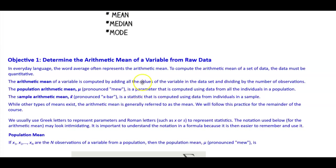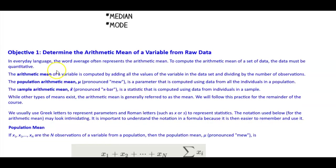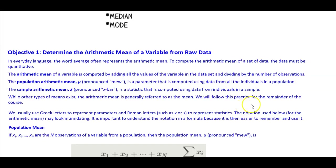Objective 1: Determine the arithmetic mean of a variable from raw data. In everyday language, the word average often represents the arithmetic mean. To compute the arithmetic mean of a set of data, the data must be quantitative. The arithmetic mean is computed by adding all the values of the variable in the data set and then dividing by the number of observations. While other types of means exist, the arithmetic mean is generally referred to as simply the mean, and we will follow this practice for the remainder of the course.